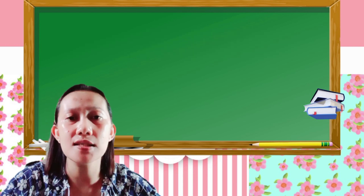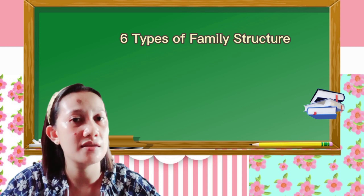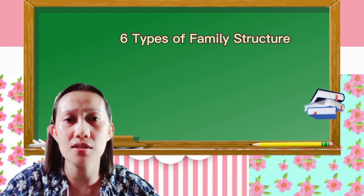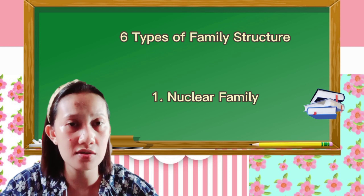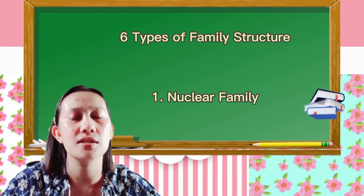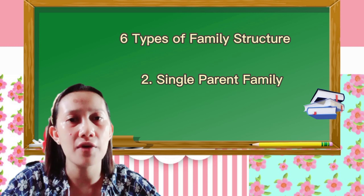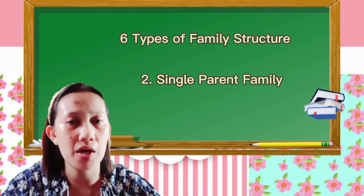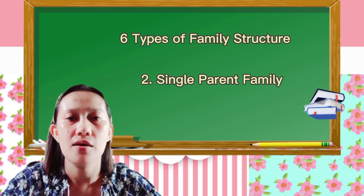There are six specific types of family structures identified by society today. First is the nuclear family — it consists of two parents and raised children. Second is the single parent family — it consists of one parent raising one or more children.